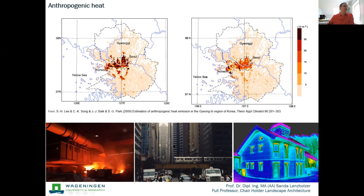Traffic is also a big cause of so-called anthropogenic heat. We can see in this simulation for different times of day in Seoul, South Korea, that during rush hours the amount of anthropogenic heat production due to traffic is much higher than outside the traffic peaks. Car traffic is also a problem, especially in very dense and deep urban canyons.